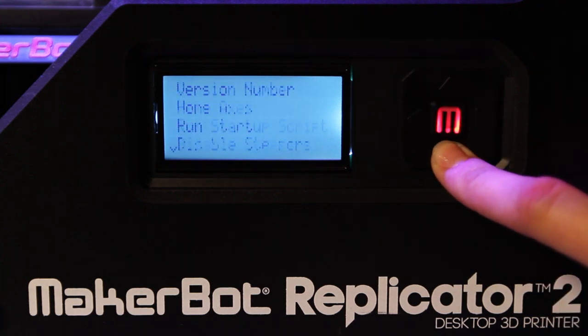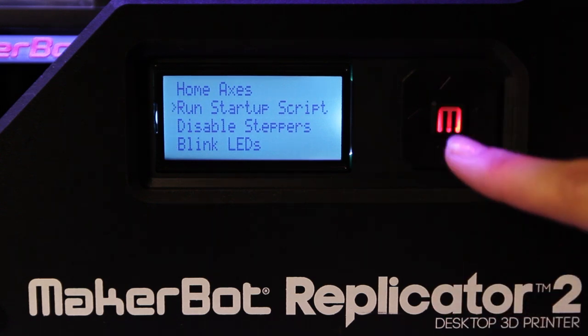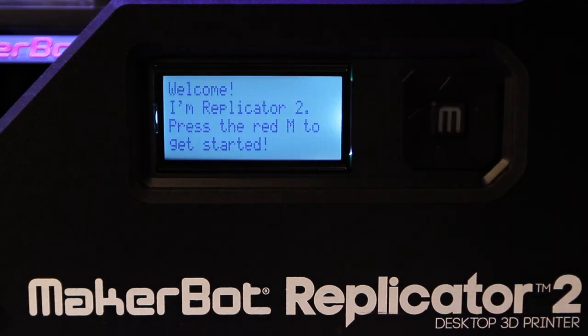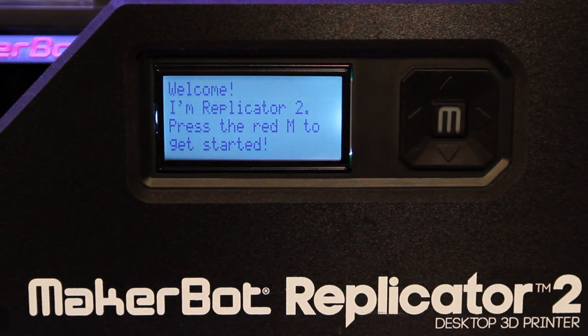Use the up and down keys to move the cursor and push the M to select. The left button often allows you to go back or cancel an action, and a blinking M means your MakerBot Replicator 2 is waiting for you to do something. The buttons are fairly responsive, so push gently.